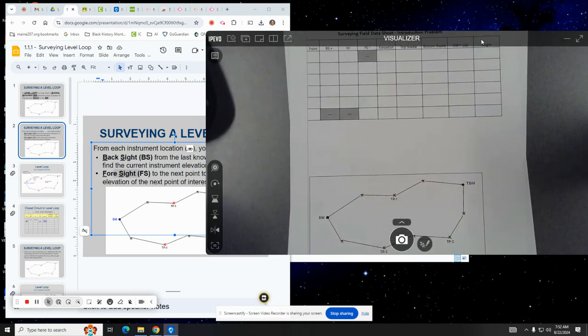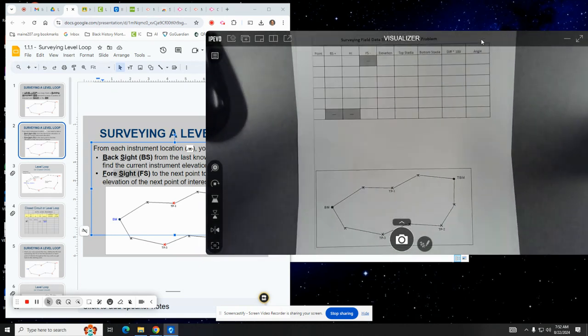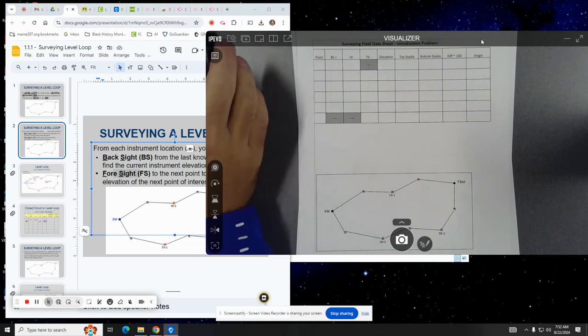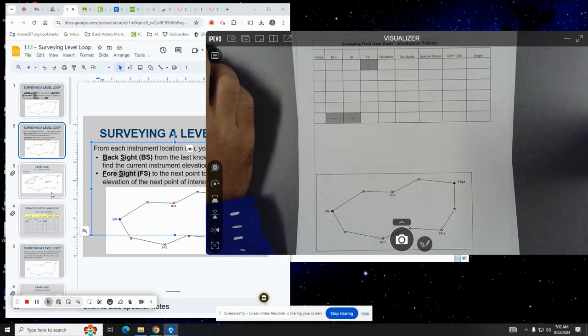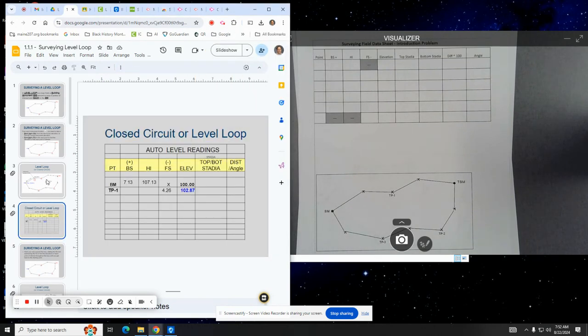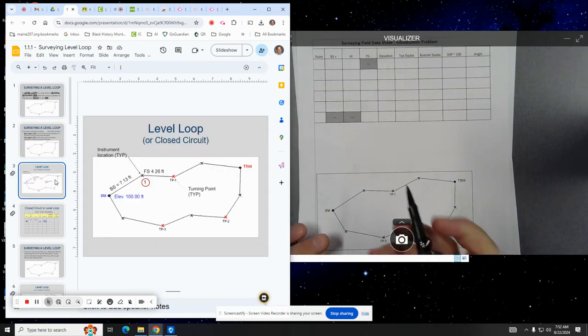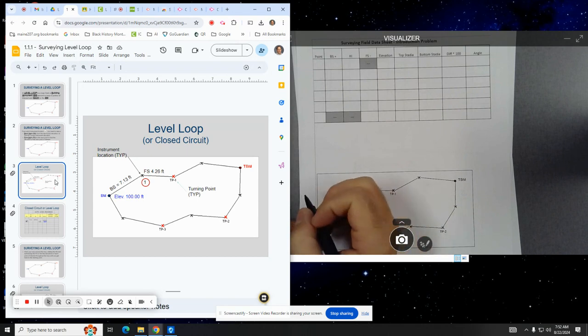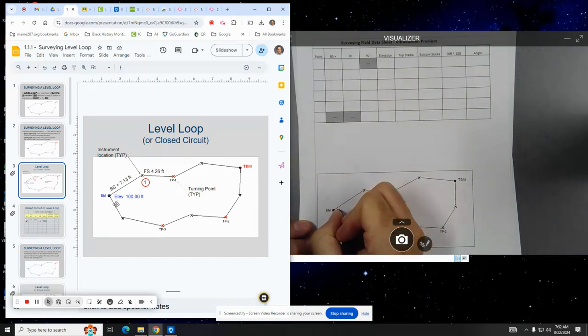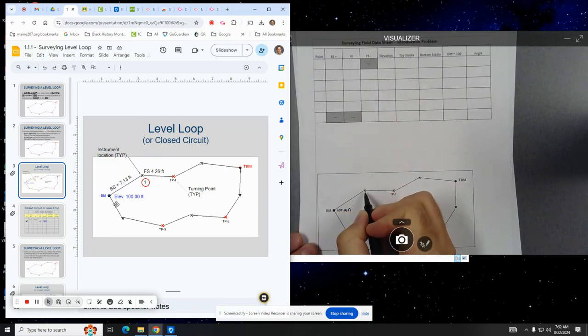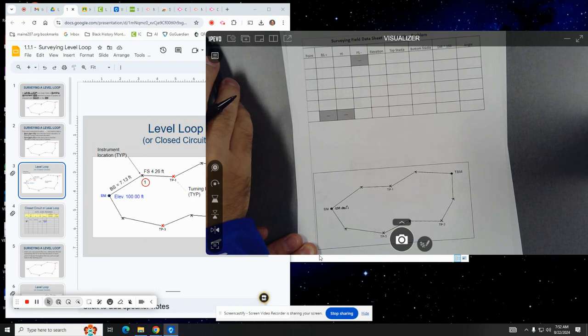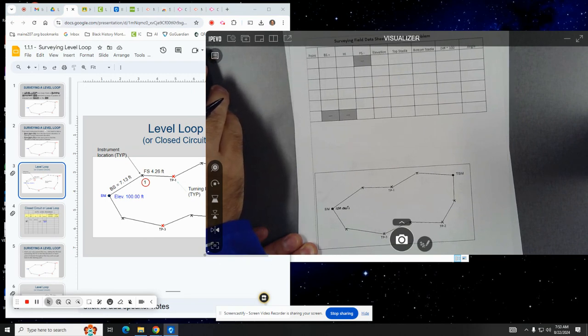So to get ourselves started, I have an introduction problem set up on our sheet here, or our presentation. And so this is our building monument, which I'm saying right here, you can see in blue, I'm saying it's at an elevation of 100.00 feet. This is the first place to put up the tripod. I'm going to make this a little bit larger here so we can see it more clearly.